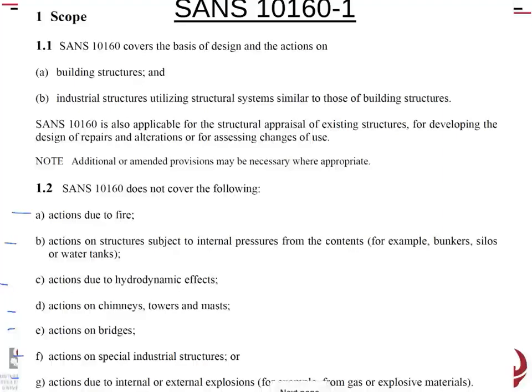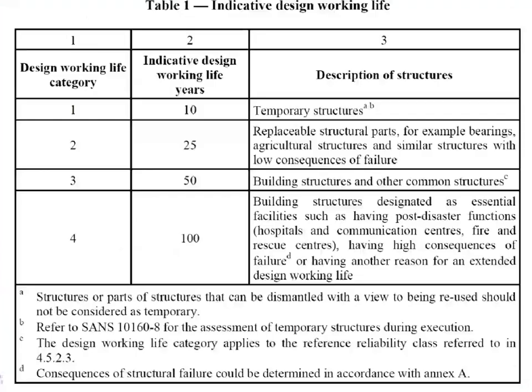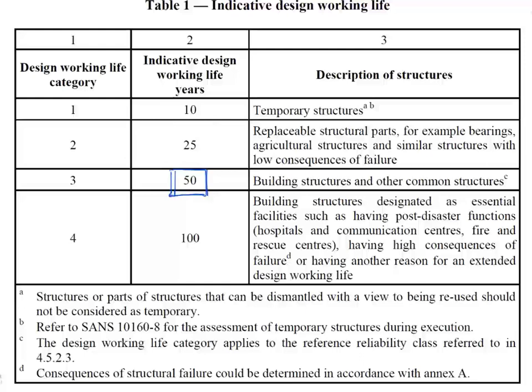When we use this code, the design life of our building is typically a 50-year period — that is for most buildings and other common structures. But there are times where it makes sense to be more conservative and design for higher loads, or less conservative for lower loads. For instance, a temporary structure — the gazebos at open day and orientation week — you'd design that for a 10-year period. It's only up for a week or two, and you'd design it for the worst wind in 10 years.